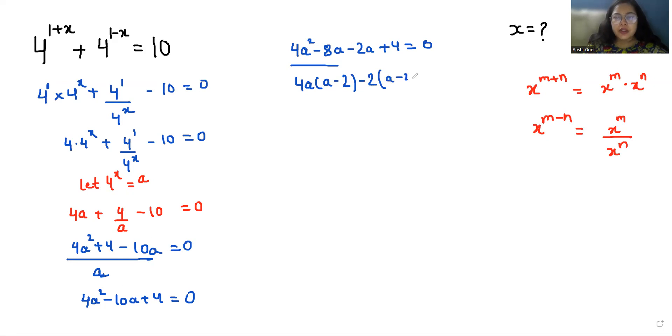And from here, if I take -2 as common, so a - 2 = 0. So 4a - 2 = 0 or a - 2 = 0. Taking a - 2 as common, a equals 2/4, that is 1/2, and a equals 2.